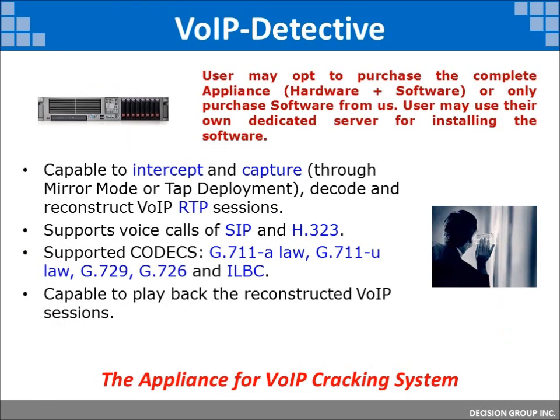The next product is the VOIP Detective, targeting voice over IP traffic. Common VOIP traffic uses several codecs, including G.711, G.726, G.729, and ILBC. Decision Group's VOIP Detective supports all these codecs. If there are unsupported codecs, Decision Group can also change the embedded codecs to fulfill customer expectations as part of its customization service.